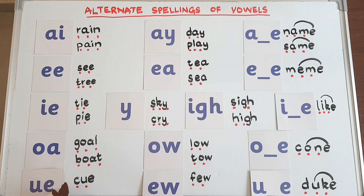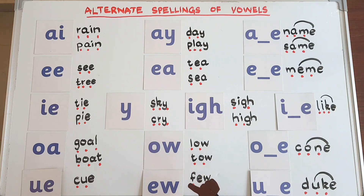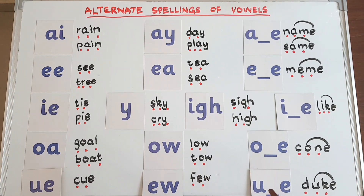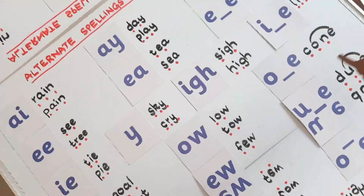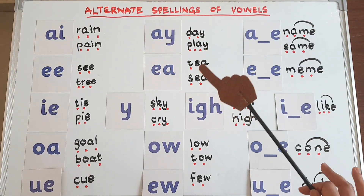Here comes the last vowel, which is 'u'. This spelling is one of the 42 sounds so kids already know it, as in 'cue'. This is the alternative spelling 'ew' — as in 'few'. And the magic 'e' spelling — 'u_e' — as in 'cube'.